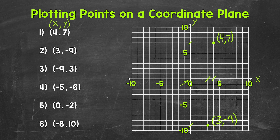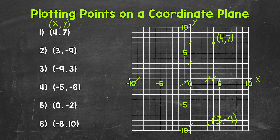Let's move on to number 3, where the x-coordinate is negative 9 and the y-coordinate is 3. So this is different than number 2 — order matters. Although we have a negative 9 and a 3, just like number 2, they are not going to be in the same place. So let's start with the x-coordinate, which is negative 9 — right here on the x-axis. And then 3, we need to go up 3, which is right here on the y-axis. So over to negative 9 and then up 3, this point is right here, so negative 9, 3.